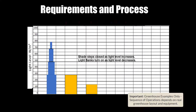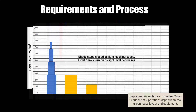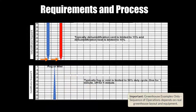Two other examples of wedge diagrams are for light and shade and relative humidity. For light and shade, if the light level increases, the shade steps towards 100% closed, and as light level decreases, the light banks turn on. For relative humidity, the vent and unit heater turn on and ramp up for dehumidification, while the fog or mist gradually turns on and increases for humidification.